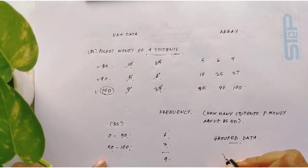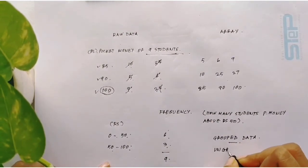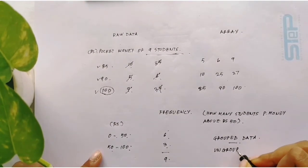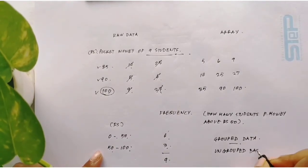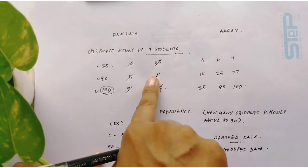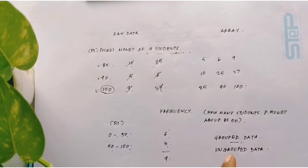So here this is a grouped data. On the contrary, what is ungrouped data? The data which is not grouped, like that of the raw data here. So this is not grouped, this is ungrouped data, and this is grouped data.